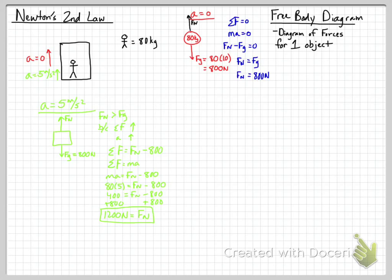The net force in this case was 400 newtons up. The normal force is 1,200 newtons up, and weight is 800 newtons down. The net force is the difference: Fn minus Fg equals 1200 minus 800 equals 400 newtons. The normal force of 1,200 newtons is larger than the weight, which is necessary for the object to accelerate upward.